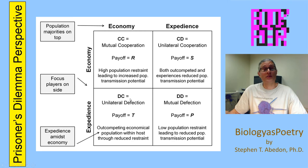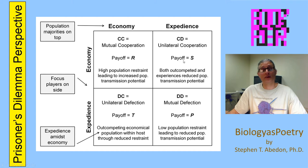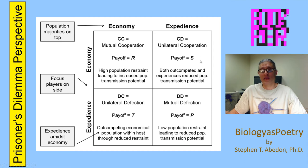Over here, we have unilateral defection — the payoff for being a defector in the midst of one or more cooperators. The payoff there is T, temptation to defect. And over here in the upper right-hand corner, we have unilateral cooperation: being a cooperator within an environment that contains one or more defectors. The payoff value for being a unilateral cooperator is S, which stands for the sucker's payoff.